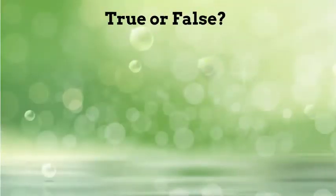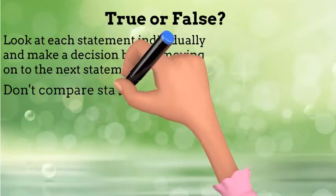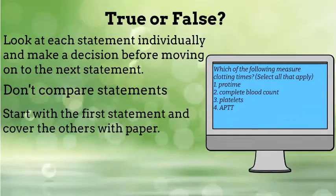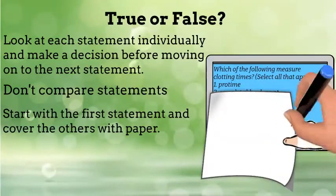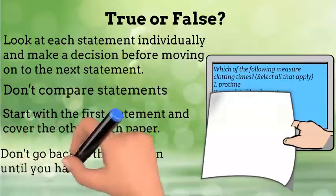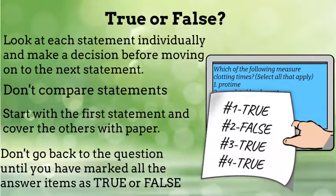Step three is deciding if each statement is true or false. We need to look at each statement individually and make a decision before we can move on to the next statement. Don't compare the choices or it can get confusing. One trick is to start with the first statement while covering the rest with a piece of paper. Decide if the statement is true or false and write it down. Then move the paper down so you can see only the next statement in order. Don't go back to the question until you have marked all the statements as true or false, and don't change your decisions — stick with your gut.